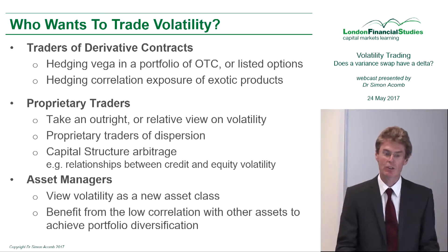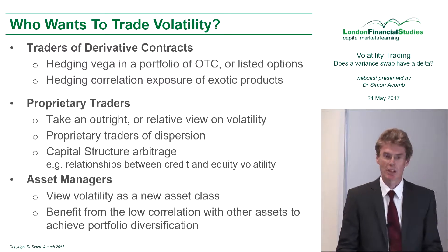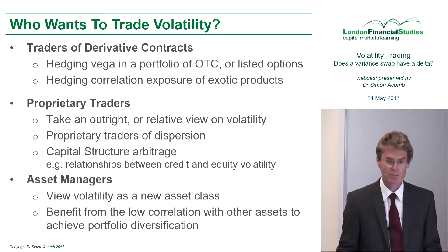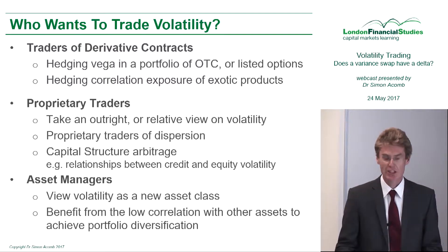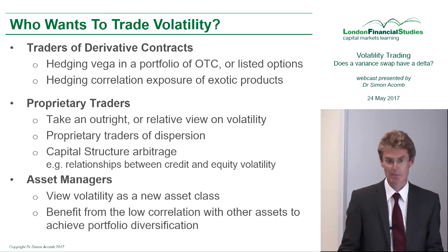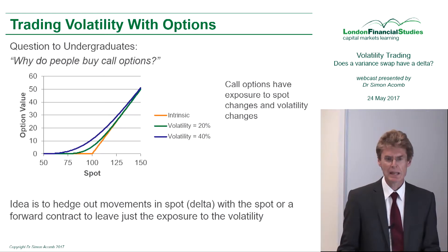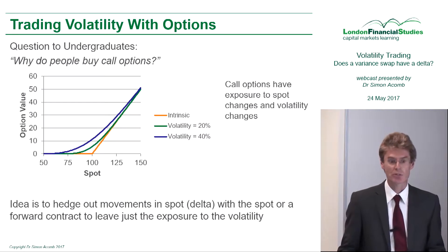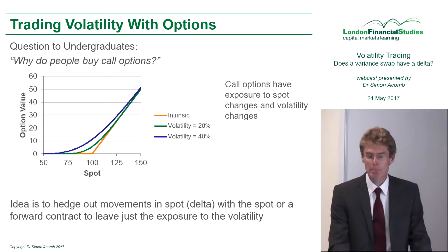There are basically three sorts of people who want to trade volatility. There are those who are traders of derivative contracts — they could be people who are trading listed options and market making listed options. Why do people buy options, and in particular, why do they buy call options?